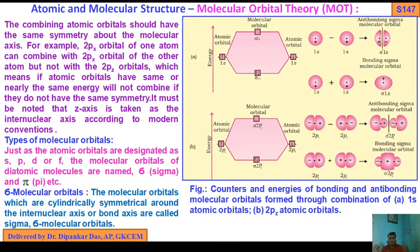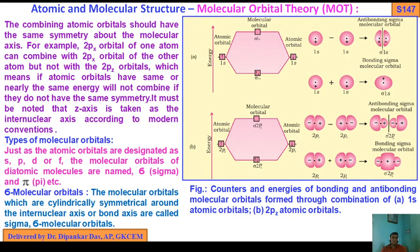The combining atomic orbitals should have the same symmetry along the molecular axis. For example, the 2px orbital of one atom can combine with the 2px orbital of another atom, but not with the 2pz orbital. Atomic orbitals with nearly the same energy will not combine if they do not have the same symmetry. It must be noted that the z-axis is taken as the internuclear axis according to modern convention.